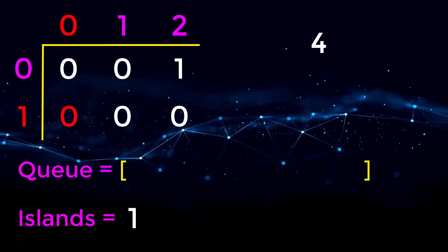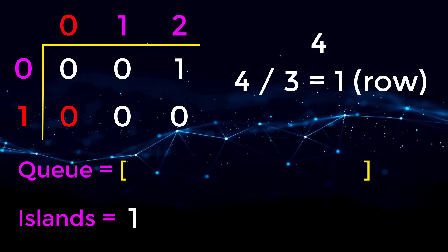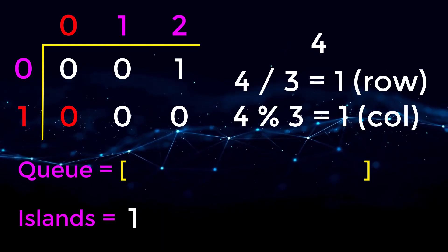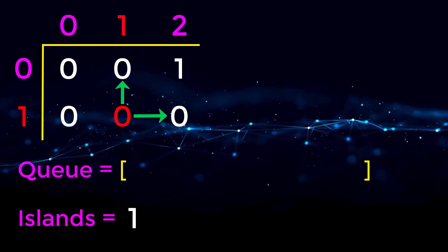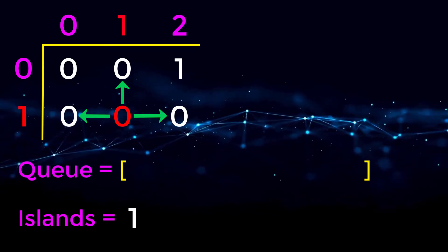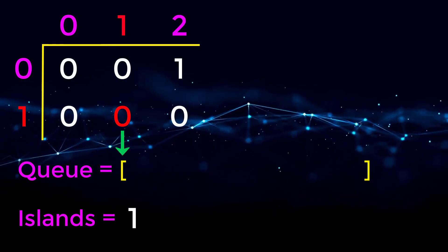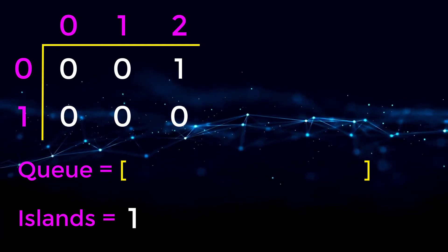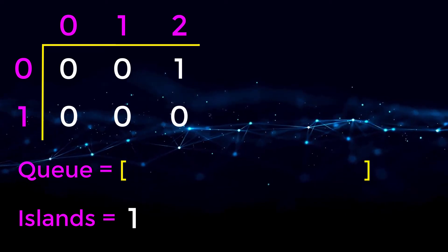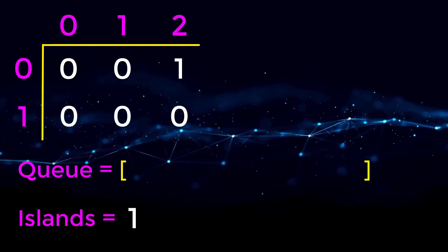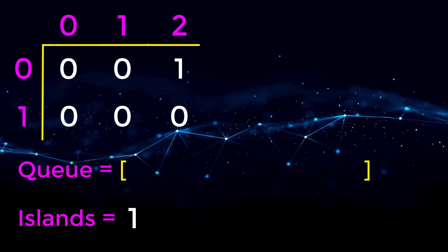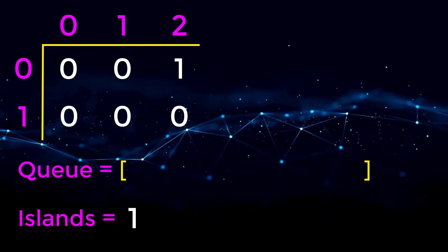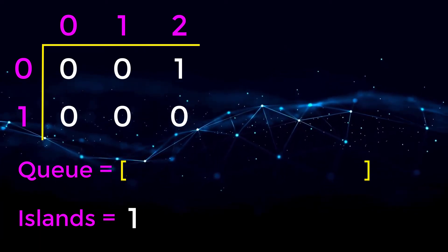We pull from the queue and get index four. Four divided by three is one, four mod three is one — so we check position one one. Above, to the right, and to the left are all zeros — water. Below is out of bounds, meaning our BFS is done for this one island. This entire island has only been counted once and cannot be recounted since we changed all positions to water.